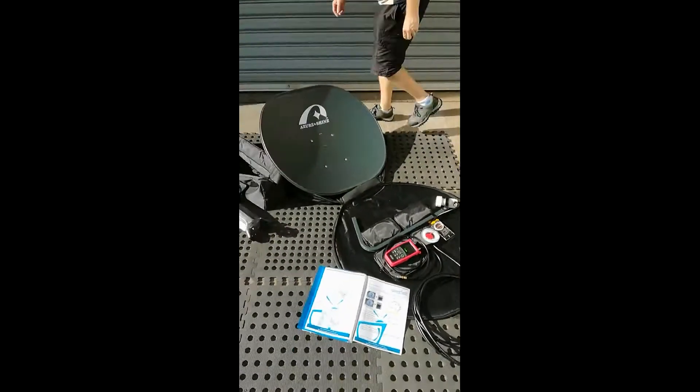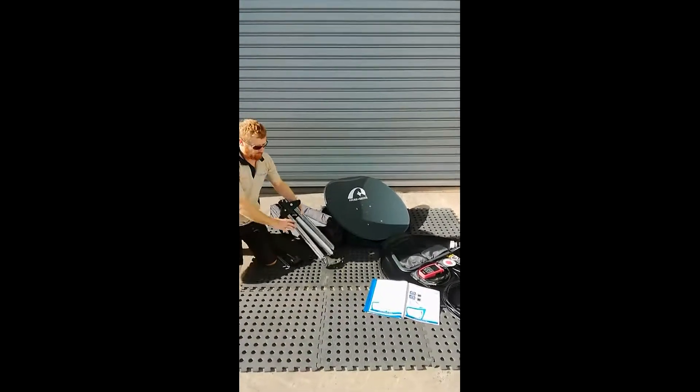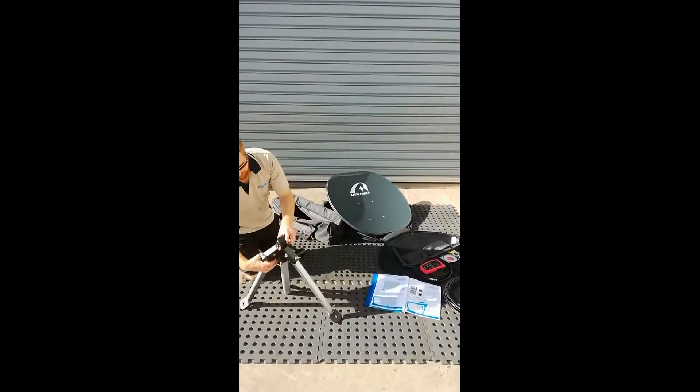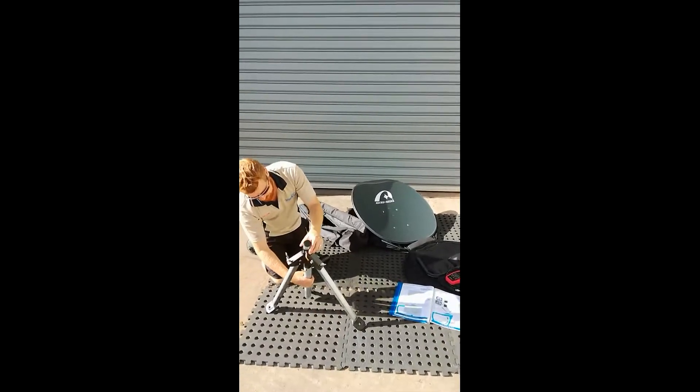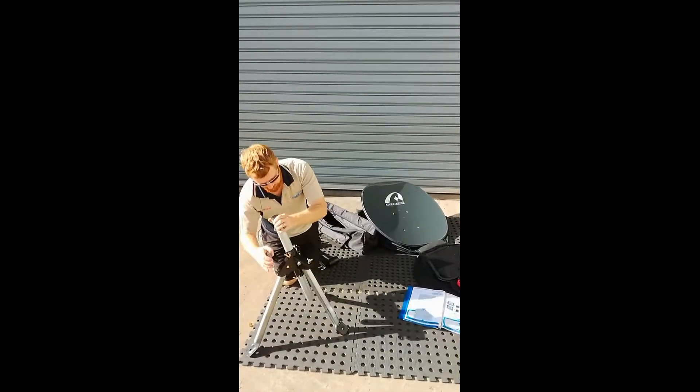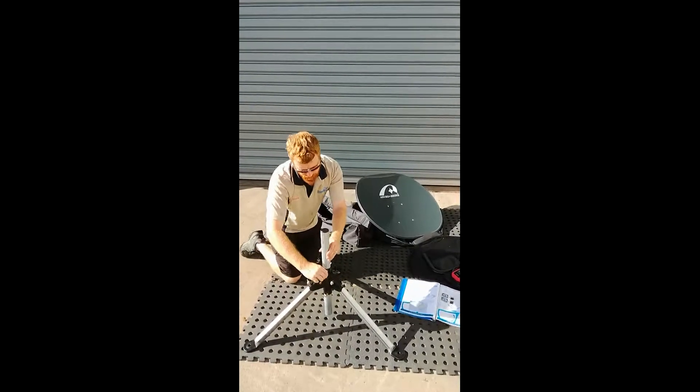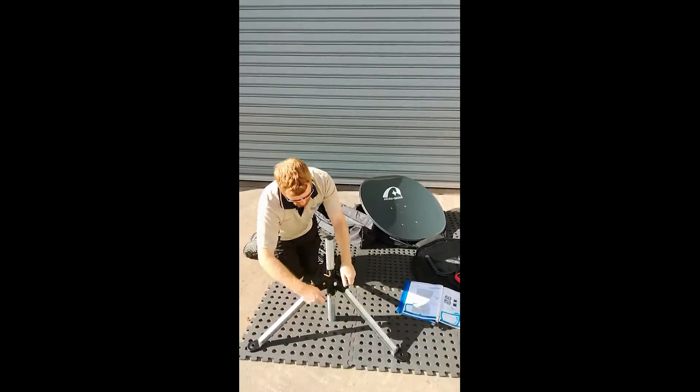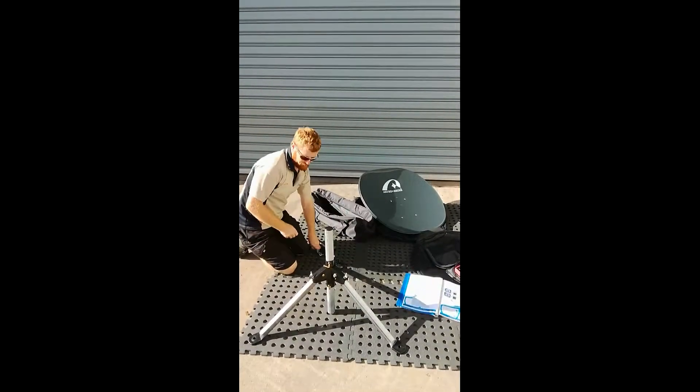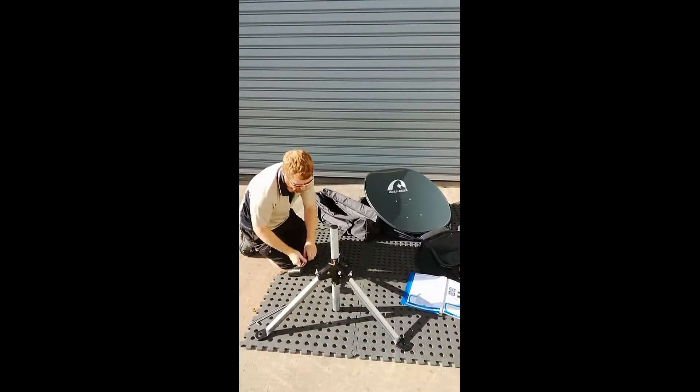So first of all we'll secure the tripod to the ground. We'll try and keep this as low as we can to keep it more secure in strong winds. And then you've got wing nuts here to keep it level. Secure it to the ground using your provided pegs and hammer.